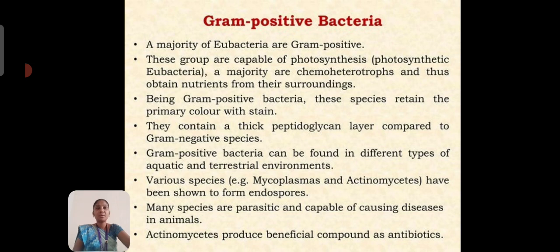Next, we will see about Gram-positive bacteria. A majority of eubacteria are Gram-positive. This group is capable of photosynthesis. The majority are chemoheterotrophic and obtain nutrition from their surroundings. Being Gram-positive bacteria, the species retain the primary color with staining. They contain a thick peptidoglycan layer compared to Gram-negative species. Gram-positive bacteria can be found in different types of aquatic and terrestrial environments. Various species such as Mycoplasma and Actinomycetes form endospores. Many species are parasitic and capable of causing disease in animals. The foremost example of a beneficial Gram-positive bacterium is Actinomycetes, which produces antibiotics.